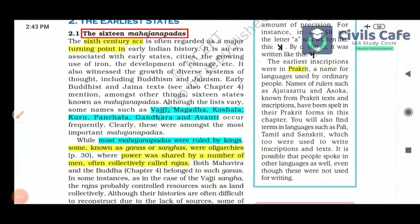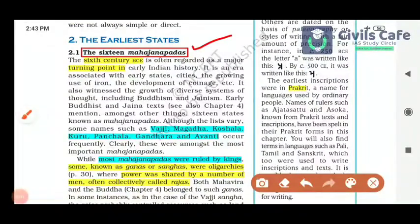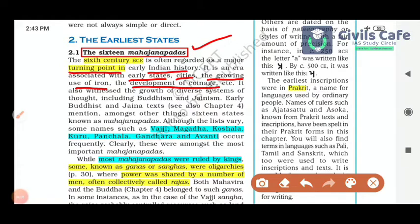Coming to the earliest states, there were 16 Mahajanapadas. The 6th century BC is often regarded as a major turning point in early Indian history because it is an era associated with early states, cities, growing use of iron, and development of coinage. All of these features emerged during the 6th century BC.